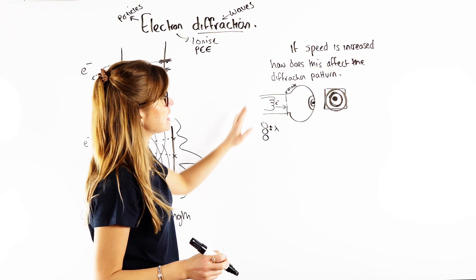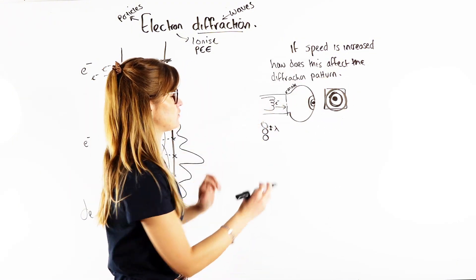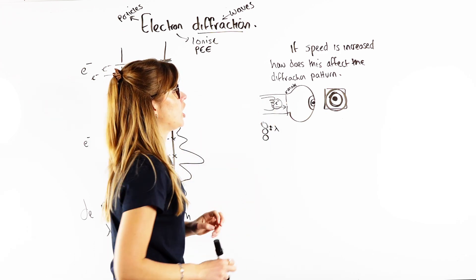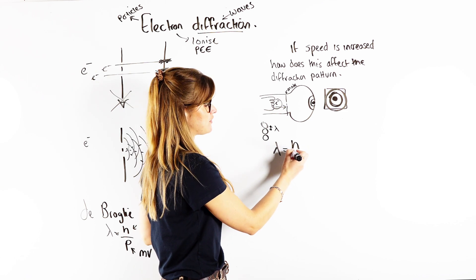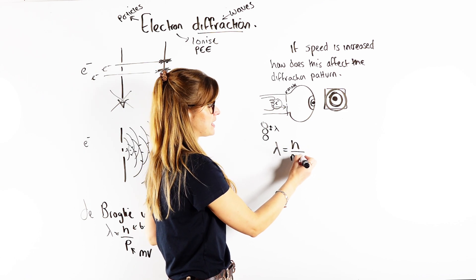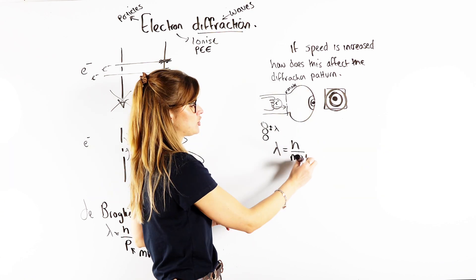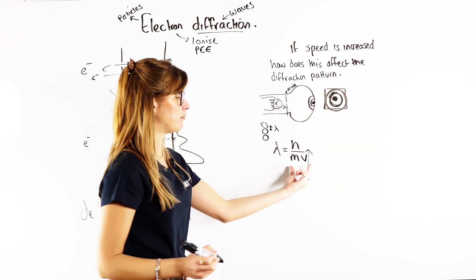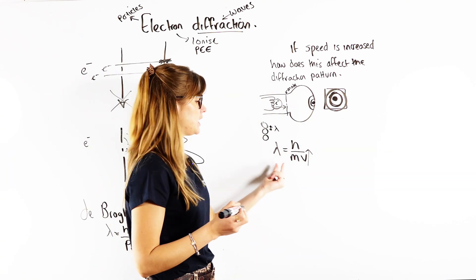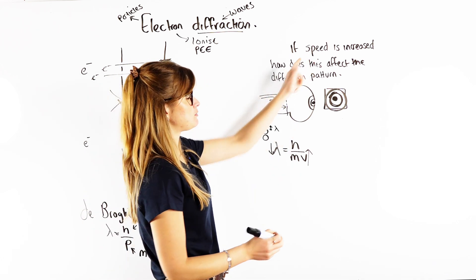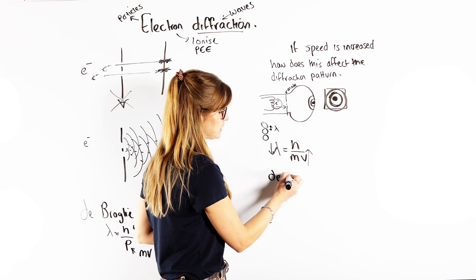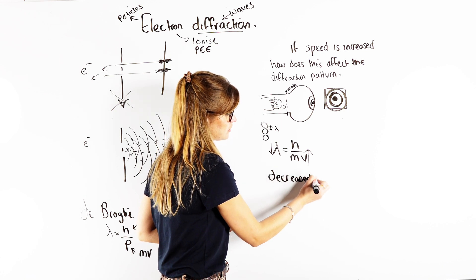So the question says, if the speed is increased, so if it increases the speed of our electrons, how does this affect our pattern? So again, we know the wavelength is equal to Planck's constant divided by their momentum. Their momentum is their mass times velocity. So if I increase their speed, I can see if the bottom part of my fraction gets bigger, what's going to happen to the wavelength is it's going to get smaller. So we've increased the speed, what we've really done is we've decreased the wavelength.